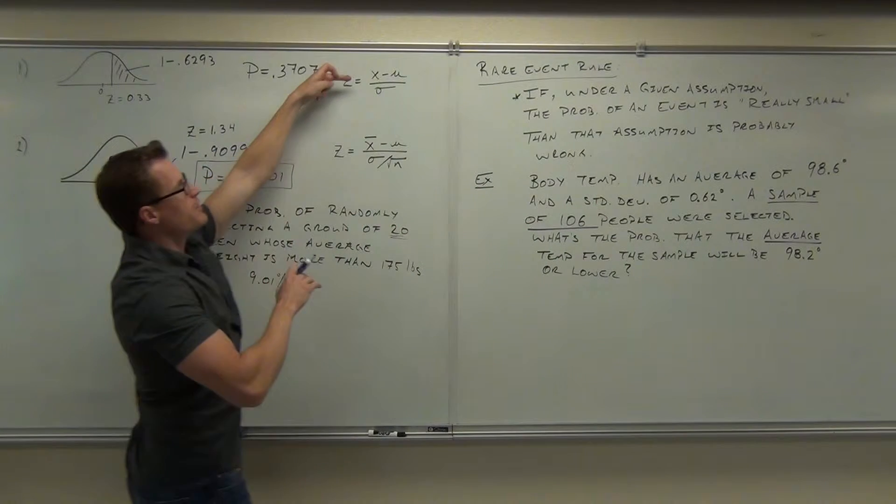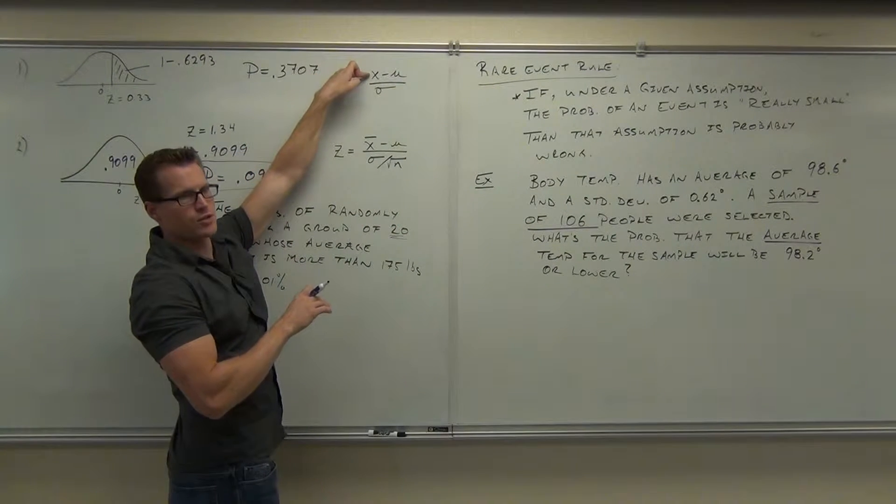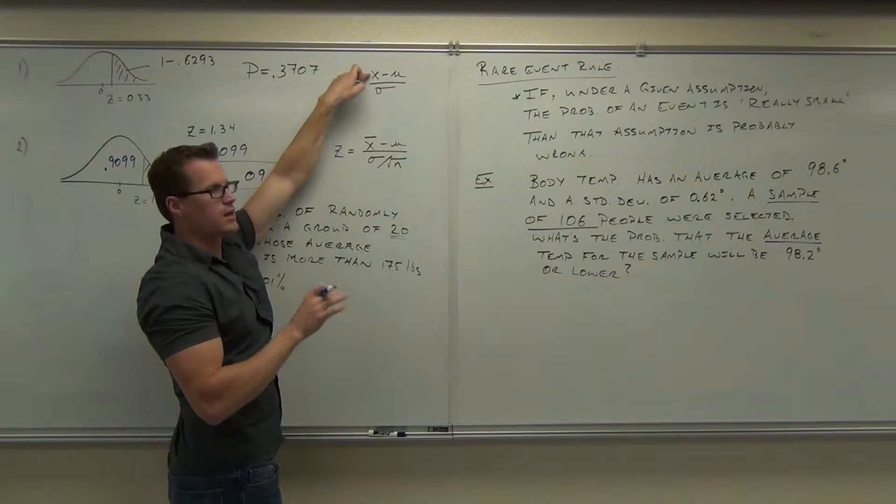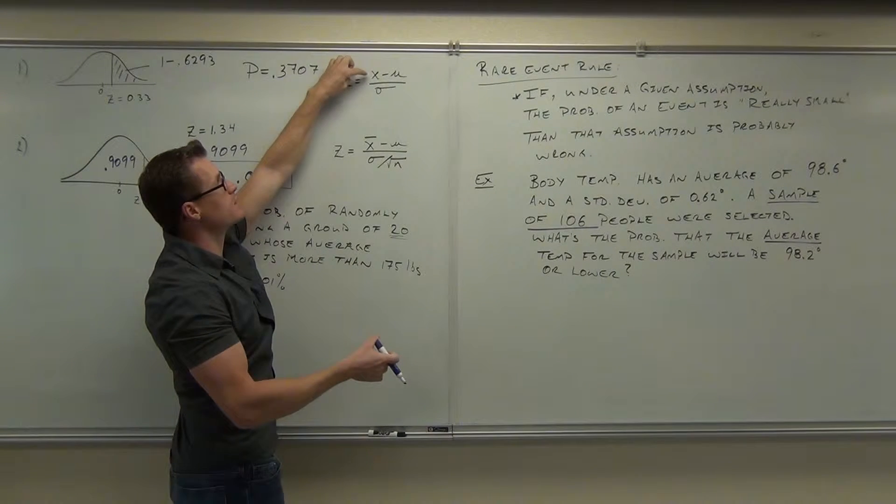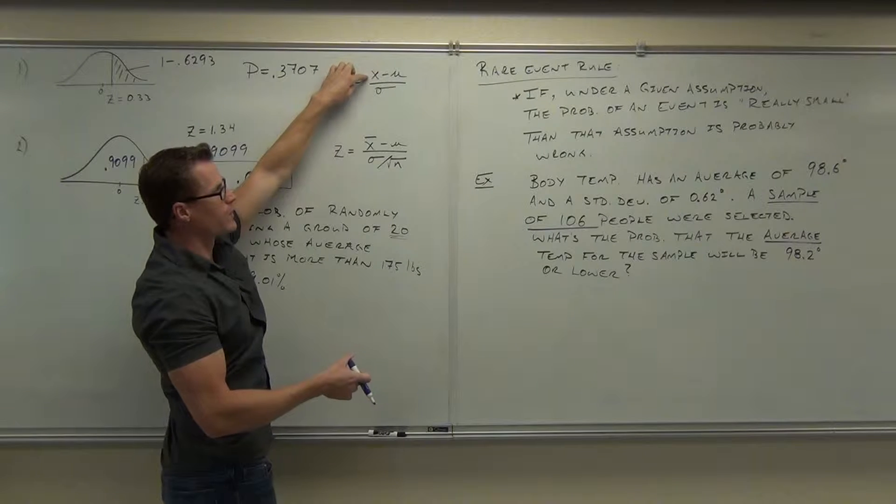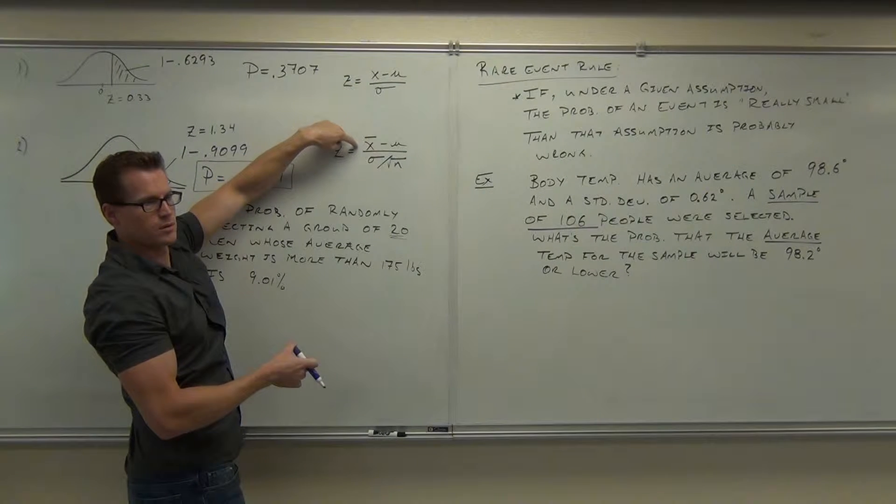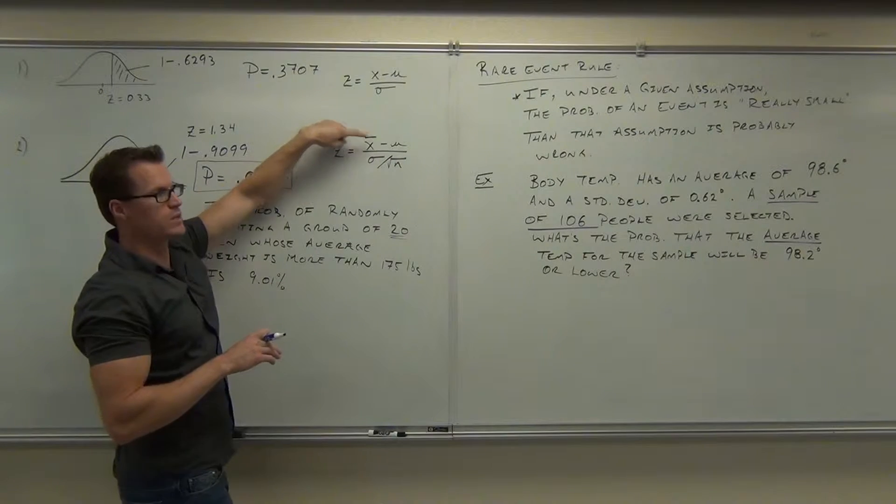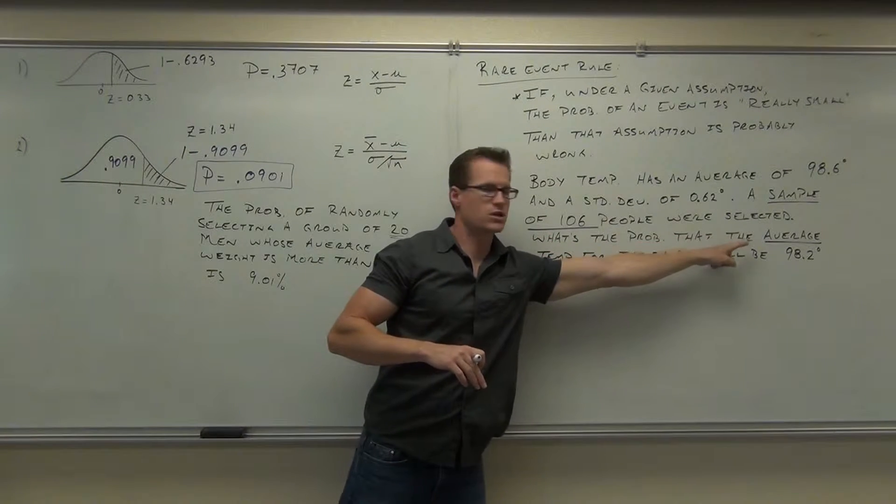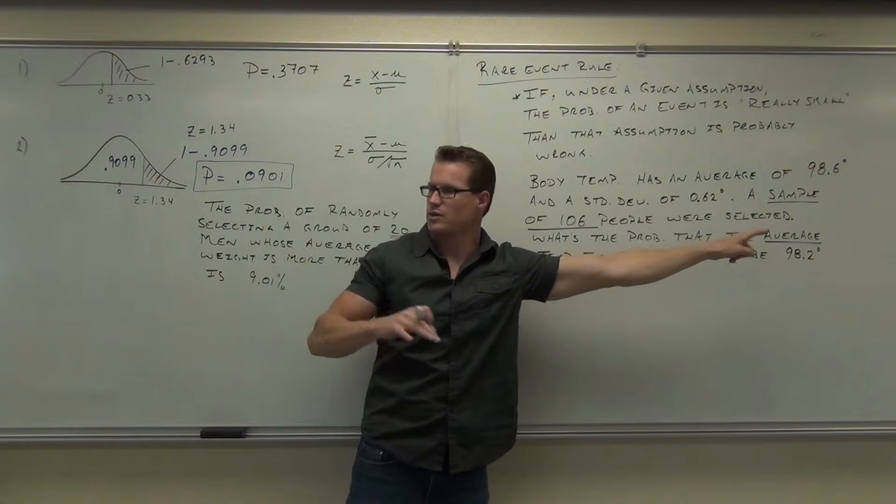You've got to find some place where you're going to plug in the 106 and it's dealing with an average. If you look back up here and compare these again, this is the data value. That's not standing for an average. This would be like, find the probability that a randomly selected person has a temperature of less than. That would be the temperature. Here, though, what's that stand for? The average of the sample. The average of the sample. What are we dealing with over here? The average of the sample.